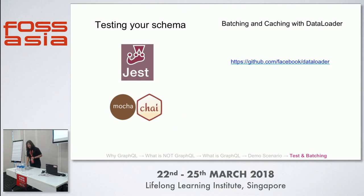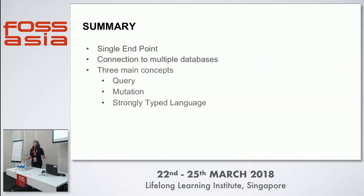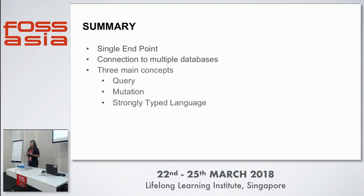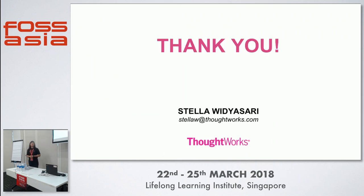Before I end, here's a summary of what I've discussed. GraphQL provides a single endpoint. The communication to the database is done by Mongoose, not GraphQL itself. The three main concepts of GraphQL are: query — equivalent to a GET operation; mutation — equivalent to update and delete; and the fact that it is strongly typed, meaning for every object you want GraphQL to recognize, you must convert it into an object type. Thank you — hopefully this was useful. If you have any questions, you can send me an email.